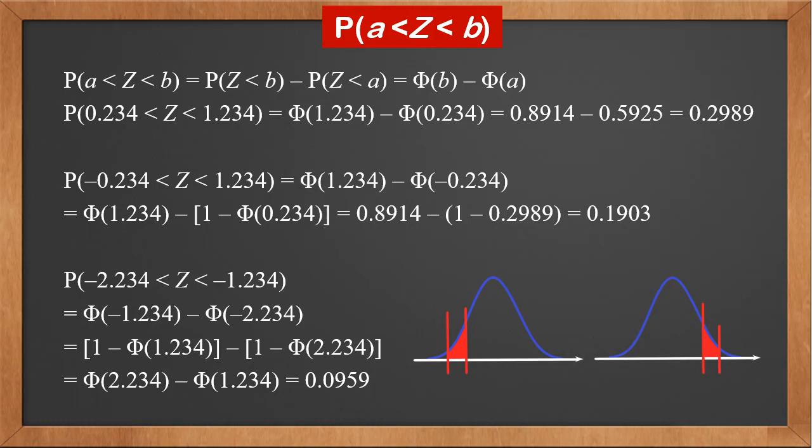If we look at it on the graph, we can see that by symmetry, the probability between -2.234 and -1.234 is the same as the probability between 1.234 and 2.234. Therefore, you can always sketch the graph to help you resolve probability problems.